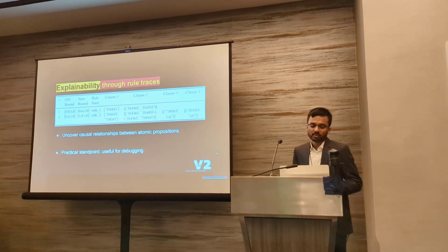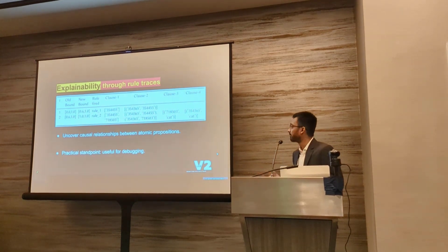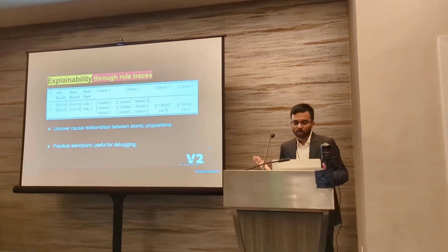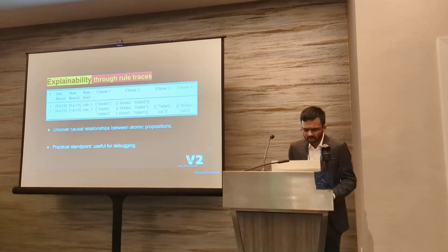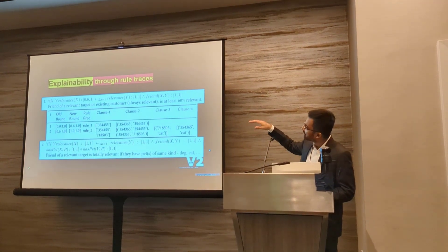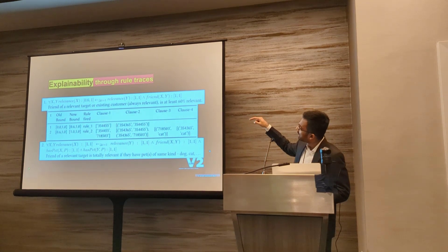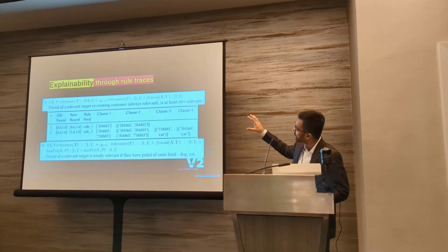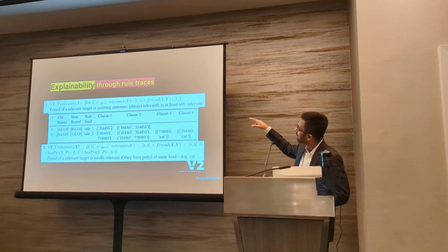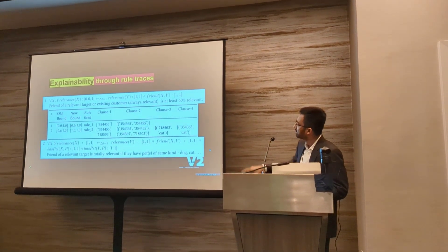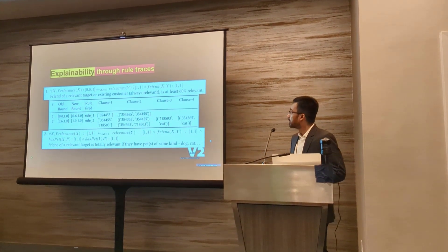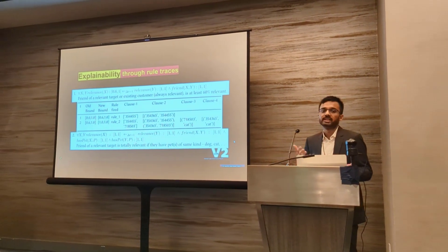The rule trace is useful for uncovering causal relationships and from a practical standpoint it's very useful for debugging. With black-box models, you can't understand why they give a certain output — but you can here. The six-digit numbers in the trace are node IDs: capital Y has been grounded with a specific node ID, and X and Y have been grounded with their node IDs for each rule. At the end of the inference process you can exactly pinpoint why a certain interpretation changed at a certain time point.